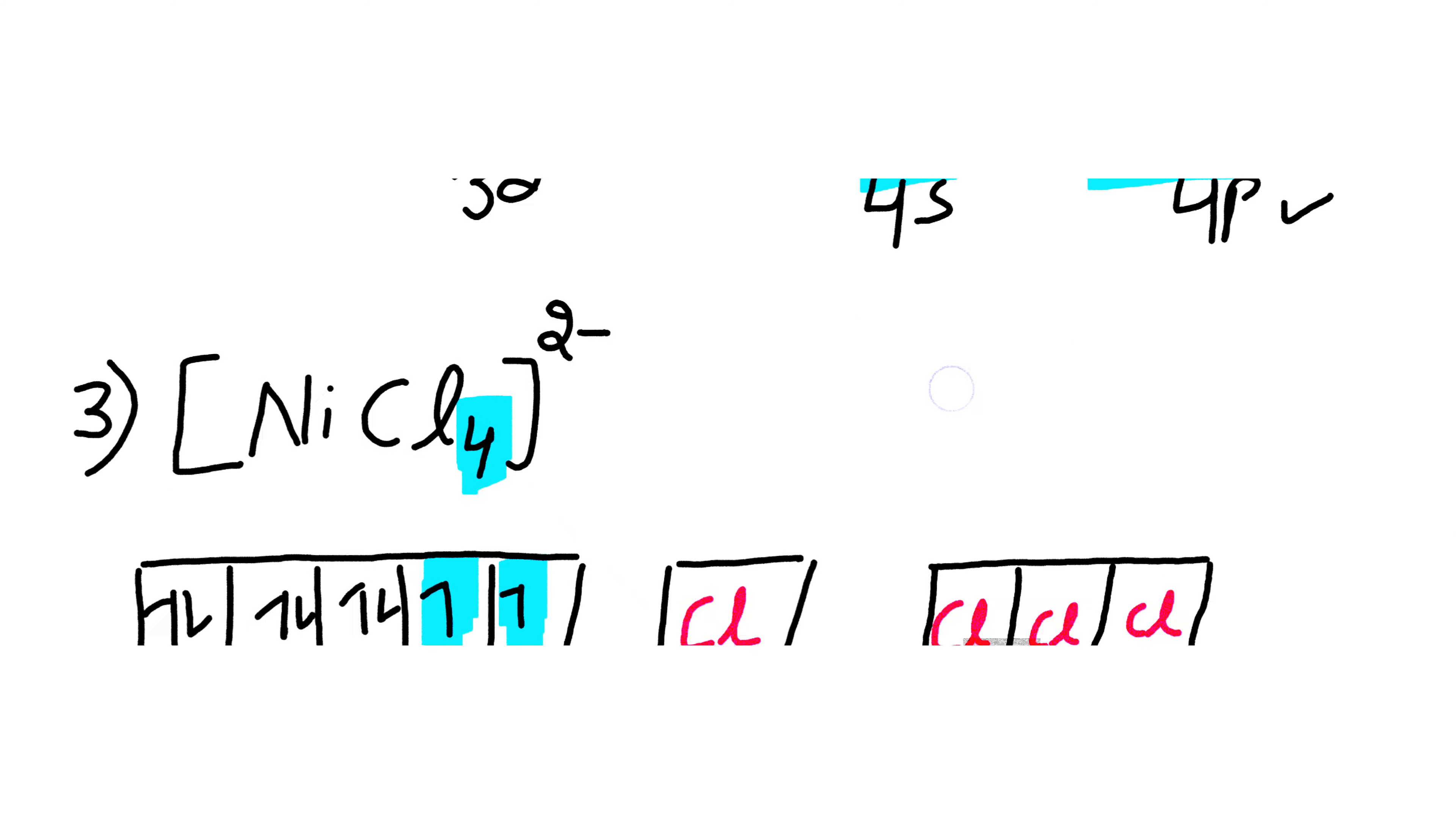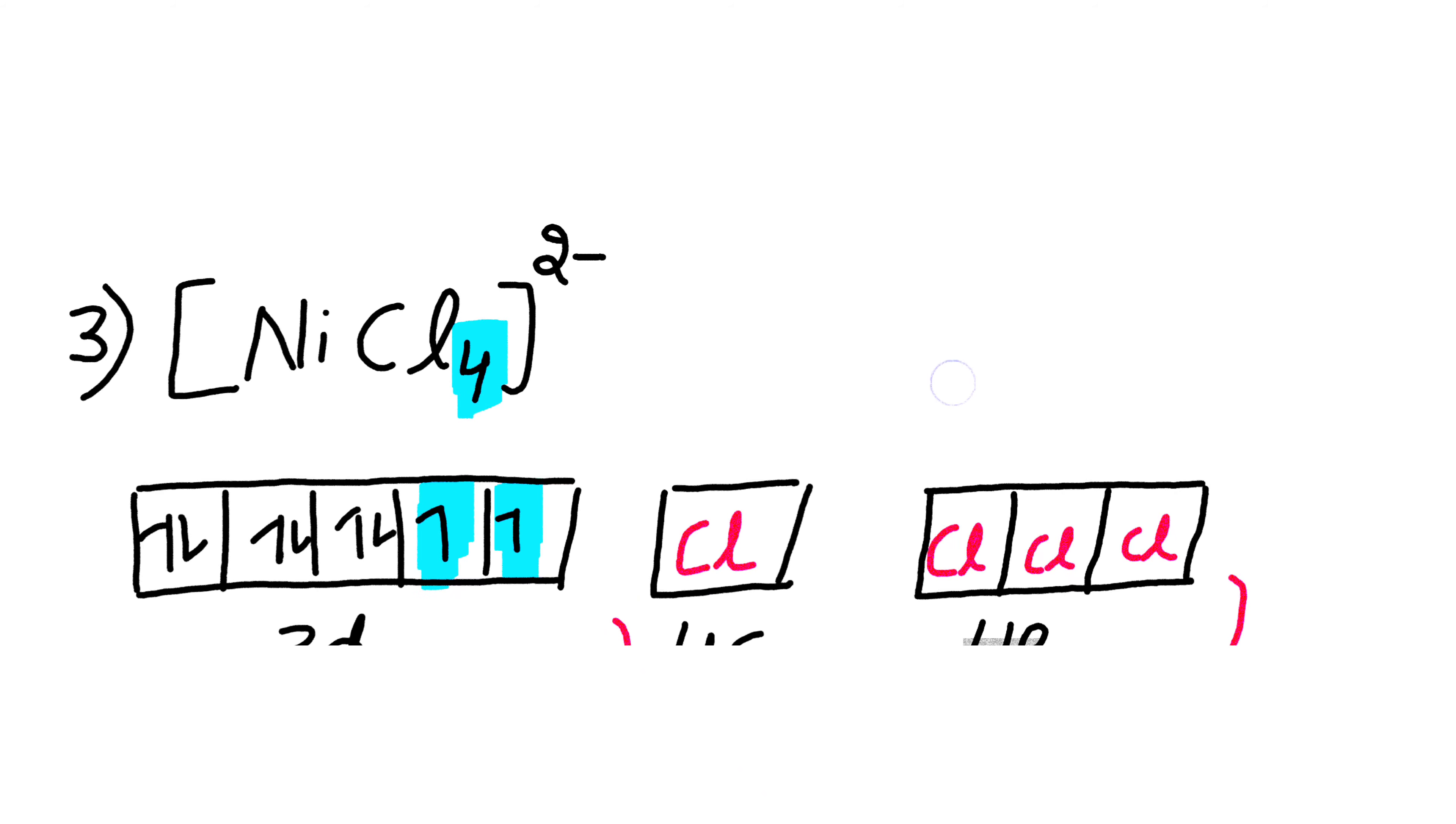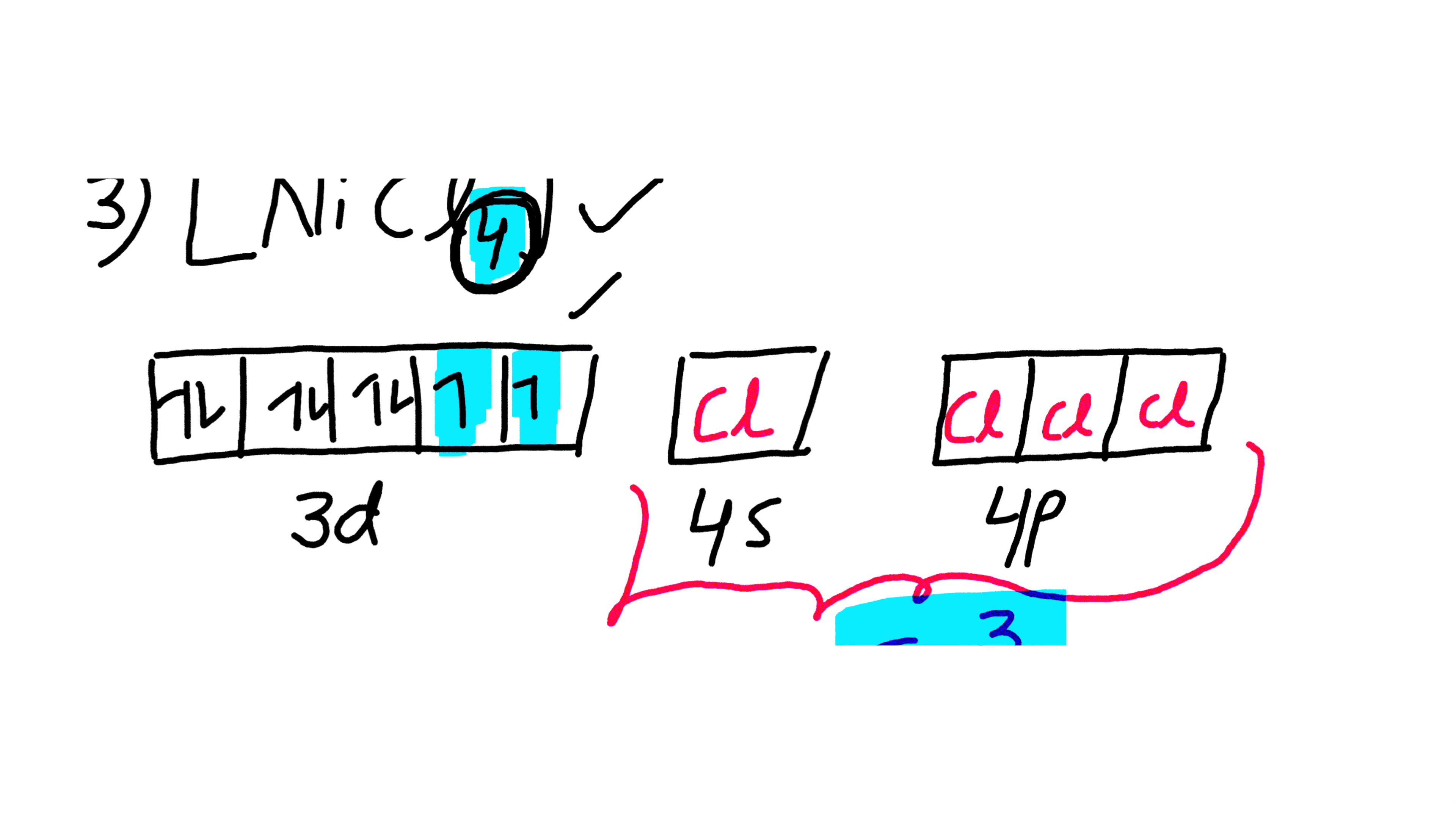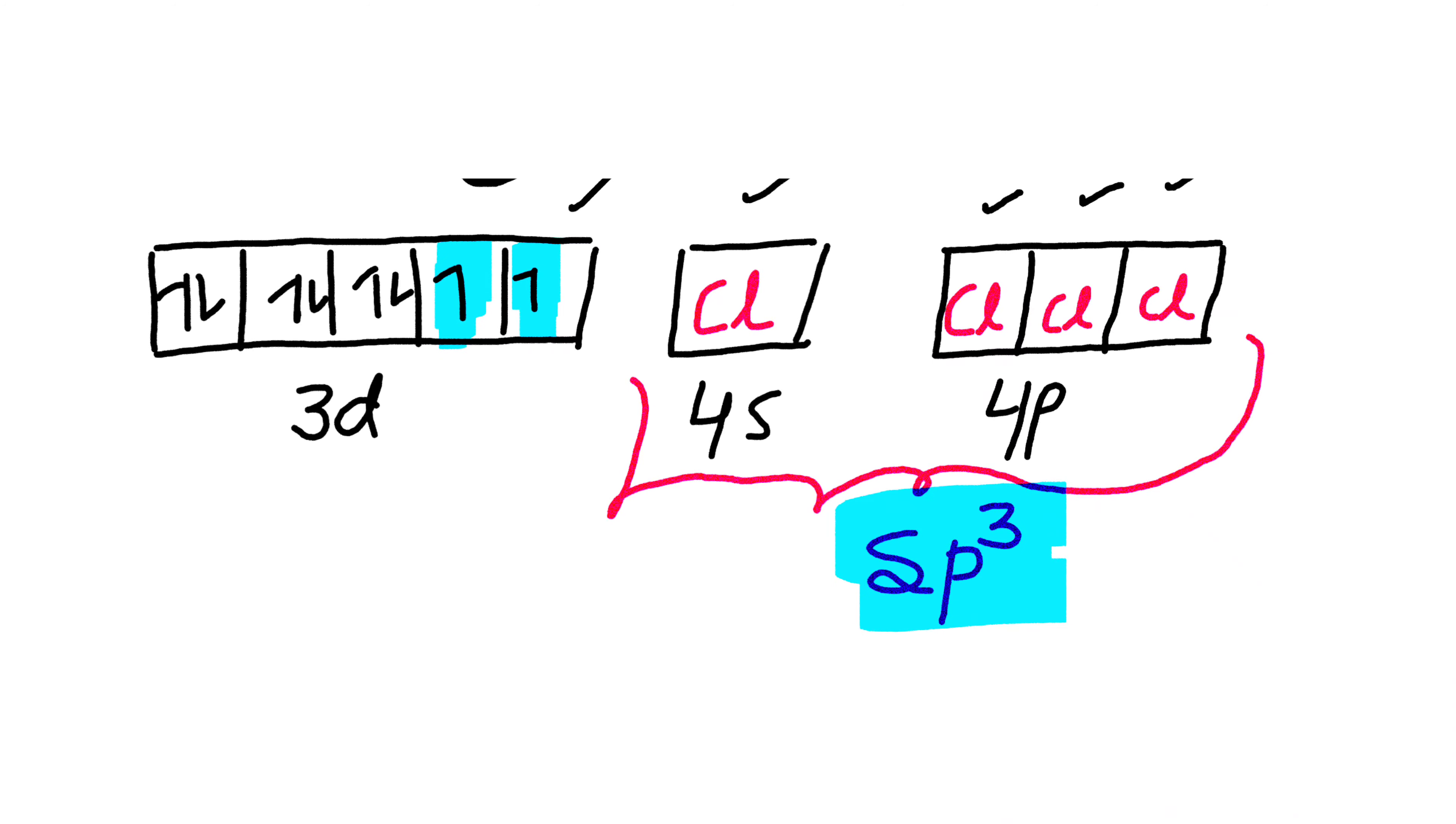Moving to the third step, we have to arrange the number of ligands in the empty orbitals. This theory states that we fill the empty orbitals with the number of ligands. We can clearly see there are four chlorine atoms present as ligands. So there will be four chlorines filled in empty orbitals - first one, second one, third one, and fourth one.